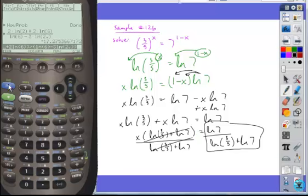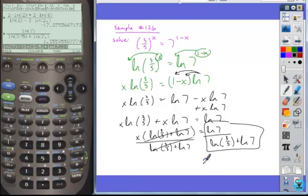When we plug that in, I'm going to take the ln of 7 and I'm going to divide by the entire quantity ln of 3 fifths plus ln of 7. I'm going to put a decimal in here so my answer is displayed as a decimal. Close off my denominator. And when I hit enter, I get my solution to be about 1.356 for my answer.